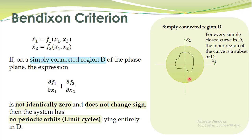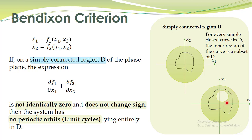Let's further elaborate with a counter-example. Here we have another region indicated by a greenish set. Is it simply connected? We draw some closed curve which lies entirely in the green region. What about the interior of this curve? The interior does not belong to the green region. So this green region is not simply connected.